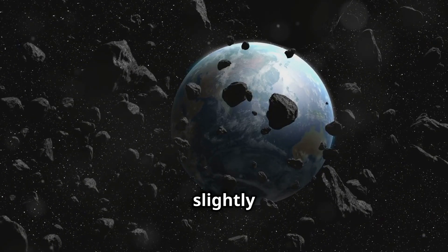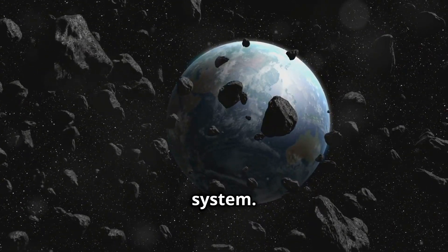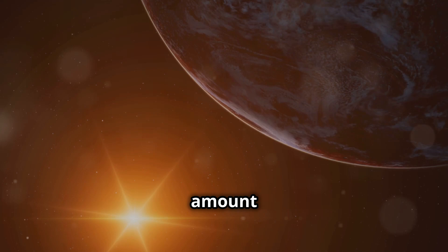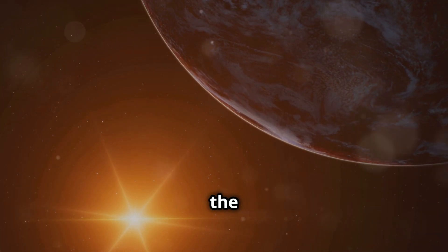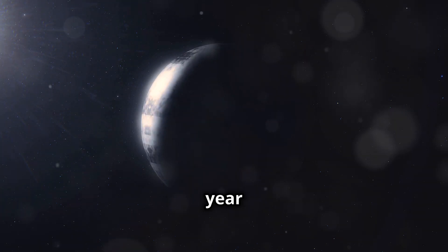Without Venus, Earth would slightly change its orbit, which could cause a series of adjustments in our solar system. This would end up messing with the amount of sunlight we receive, affecting the climate and the seasons. And it doesn't stop there. Even the length of our year would be affected.